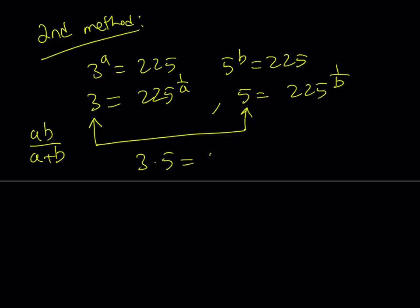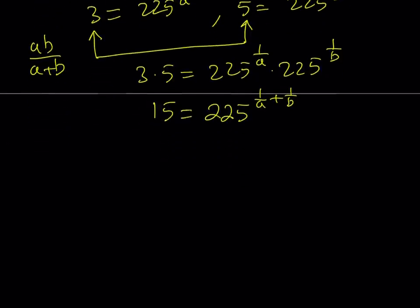3 times 5, and on the right-hand side we get 225 to the power 1 over a and 225 to the power 1 over b. 3 times 5 equals 15. And on the right-hand side, when you multiply powers with the same base, you add the exponents, right? And this gives us something nice.